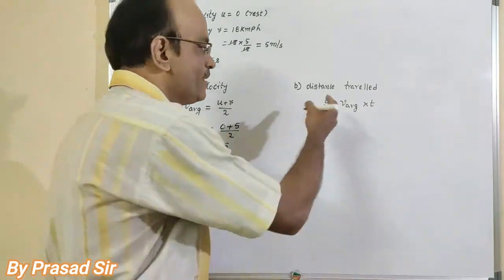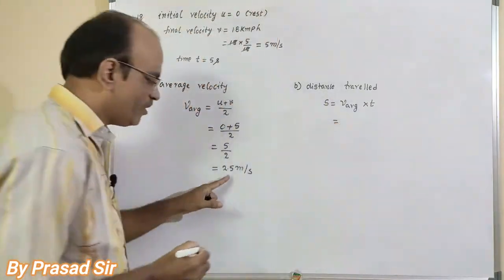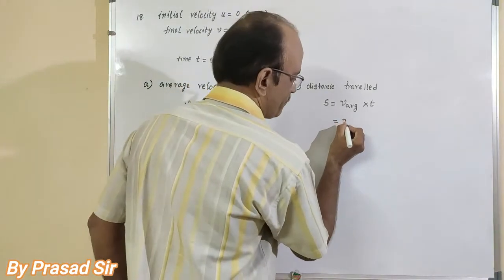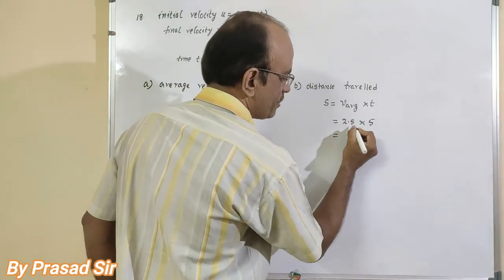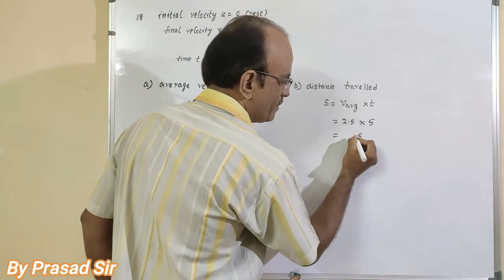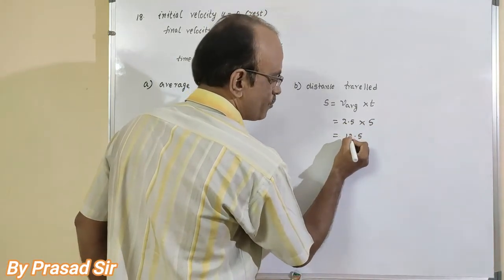half at squared. There we will use. So here v average, we already got how much? 2.5 into time 5. Multiplication: 5 by 5 is 25. Here 0.5 is 10 plus 2, 12.5.